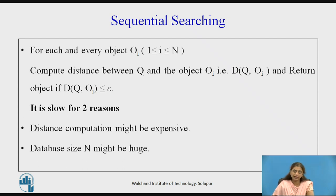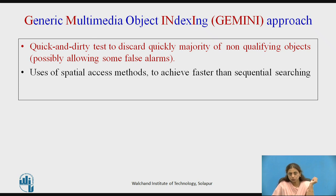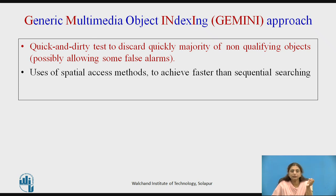That is why we use the Gemini approach — Generic Multimedia Object Indexing. It has two steps: first, a quick and dirty test to quickly discard the majority of non-qualifying objects, with the possibility of false alarms; second, use a spatial access method to achieve faster retrieval than sequential searching.